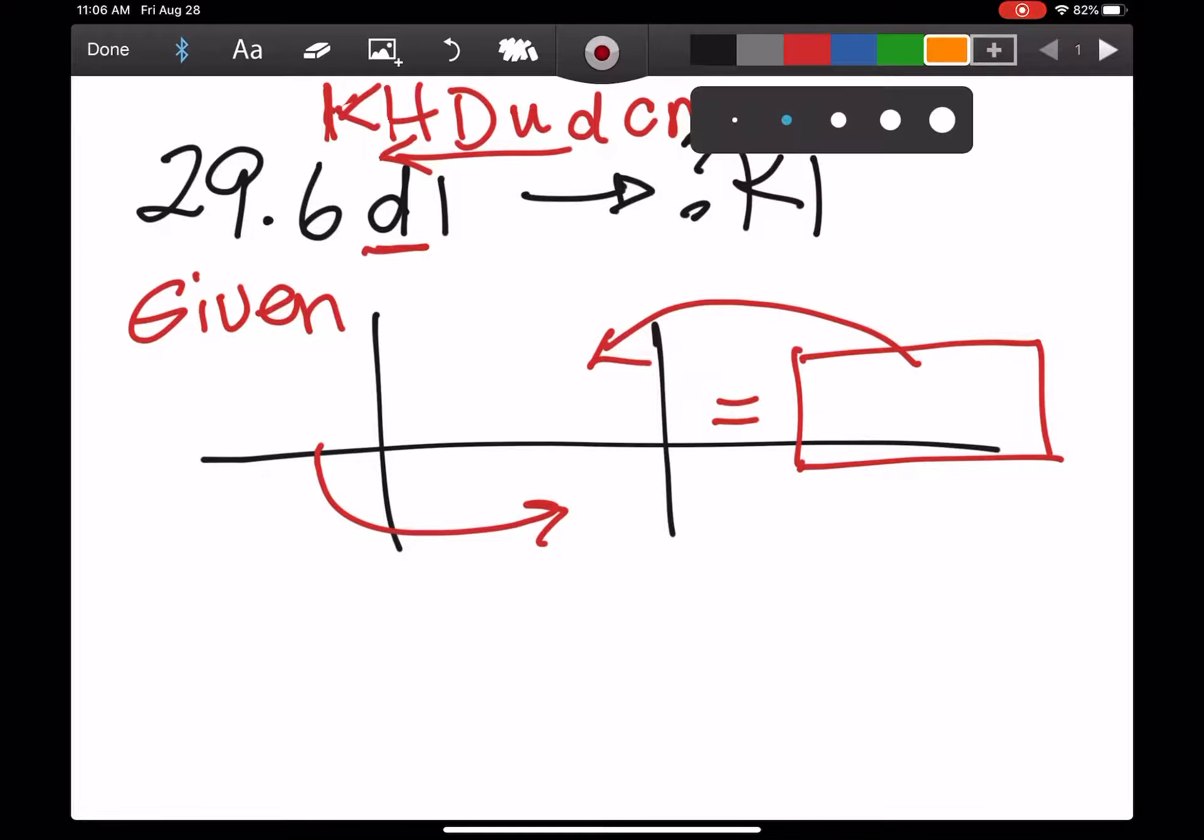It's the King Henry mnemonic: King Henry Died Unexpectedly Drinking Chocolate Milk. The big D is deca (D-E-C-A) and the little d is deci. Prefixes that are bigger are to the left and the smaller ones, smaller than the unit, are to the right.